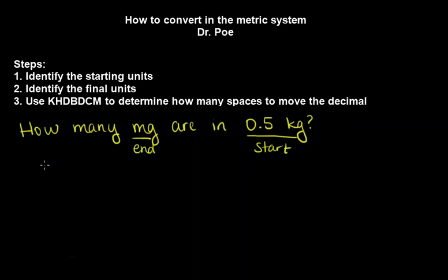OK, and I'm going to show you how to use this mnemonic. King Henry died by drinking chocolate milk. OK, so these are the prefixes for those metric system units. It's kilo-hecta-deca, base unit, deci-centi-milli.